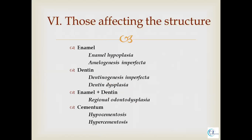The next category is those which affect the structure of the tooth. In the enamel, it will lead to enamel hypoplasia and amelogenesis imperfecta. In the dentine, it includes dentinogenesis imperfecta and dentine dysplasia. When both enamel and dentine are affected, it will lead to regional odontodysplasia. If the cementum is affected, it will lead to hypocementosis and hypercementosis. In upcoming discussions we will cover each of these developmental anomalies of teeth in detail.